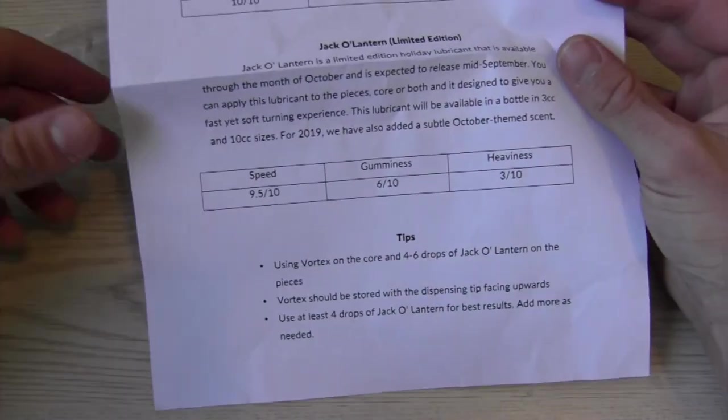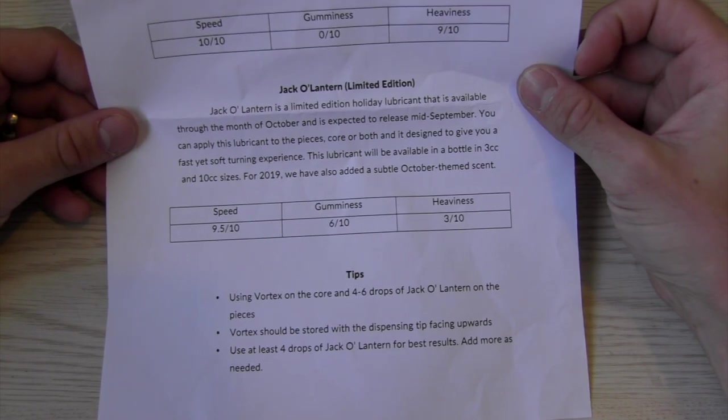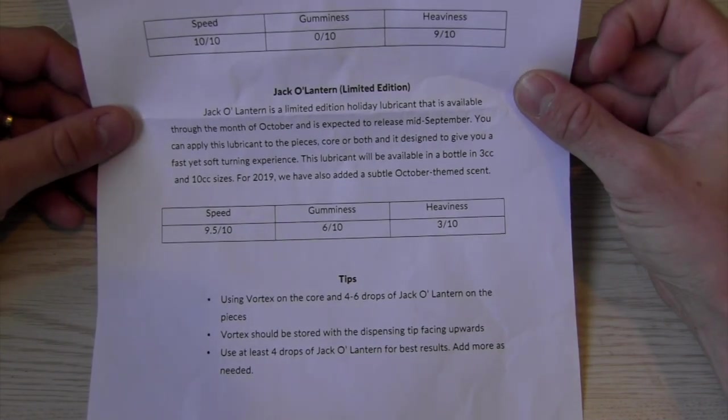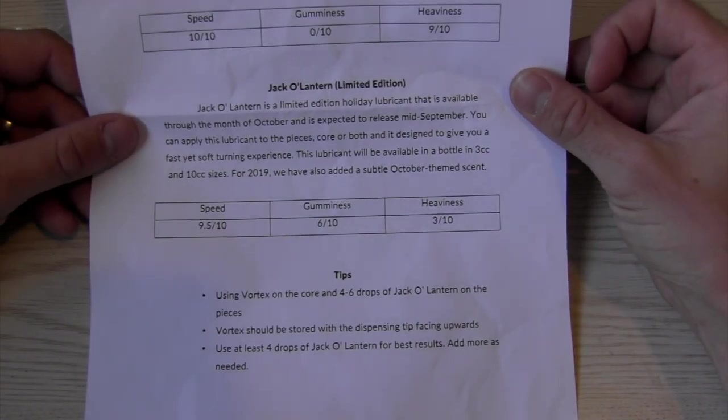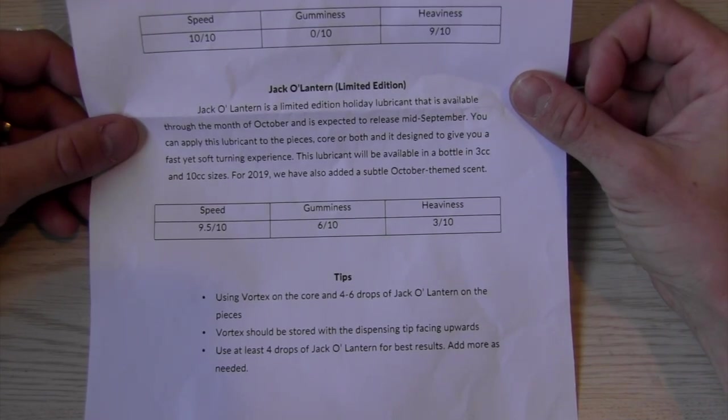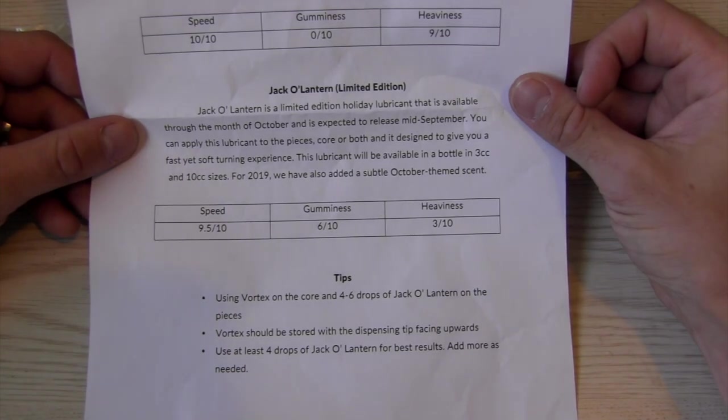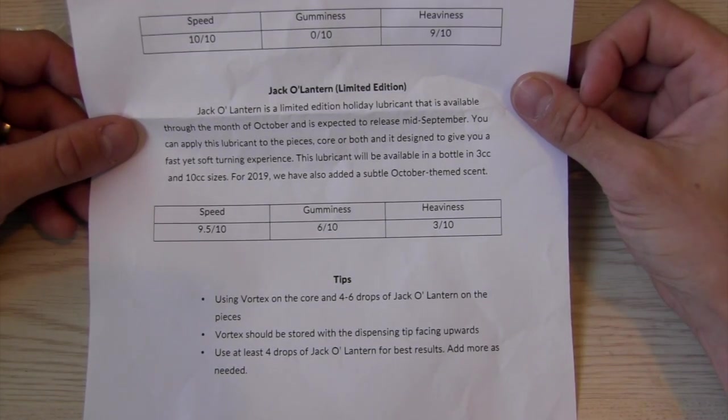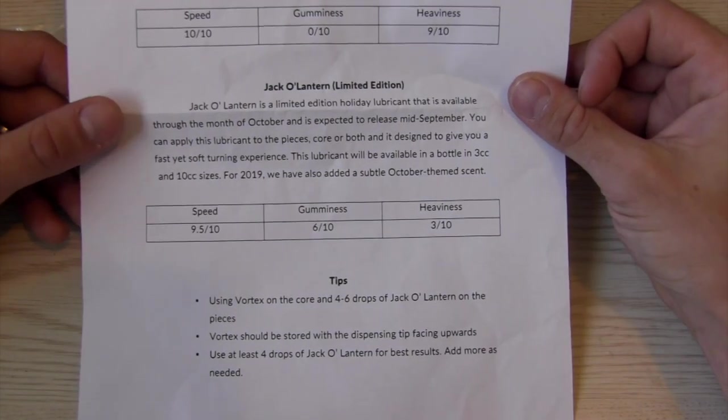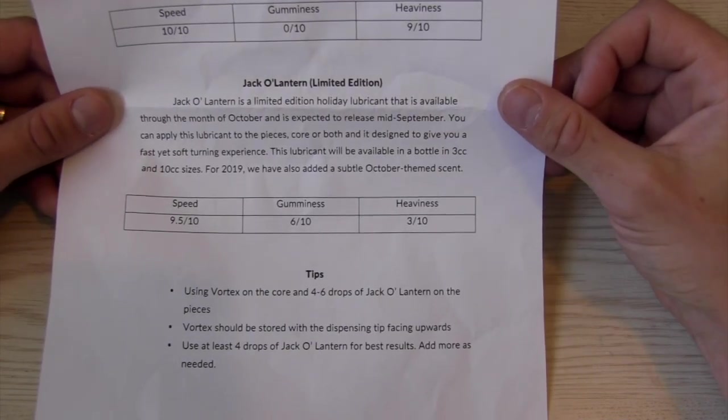So first, let's look at the jack-o'-lantern lube. Jack-o'-lantern is a limited edition holiday lubricant that is available throughout the month of October and is expected to release mid-September. You can apply this lubricant to the pieces, core, or both. It's designed to give you a fast yet soft turning experience. This lubricant will be available in the bottle of 3cc and 10cc for 2019. We have also added a subtle October-themed scent.